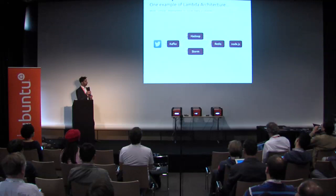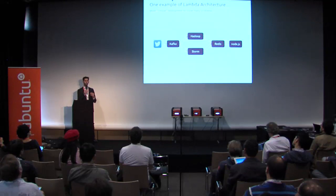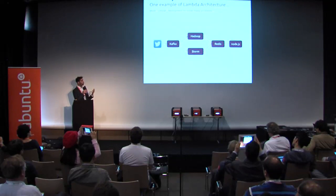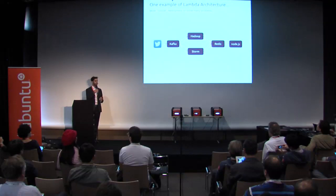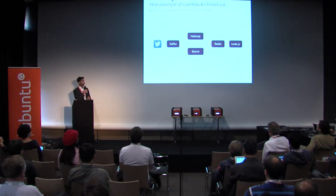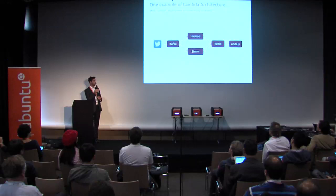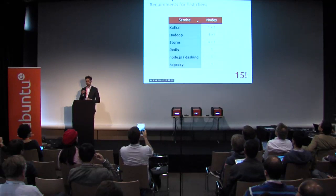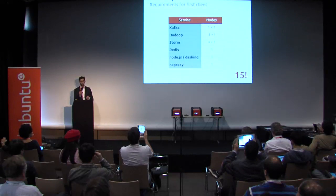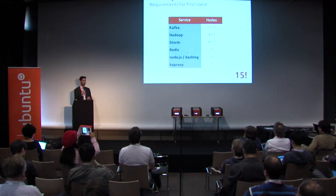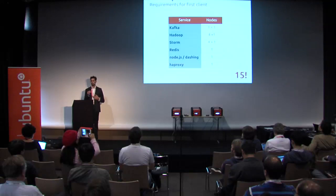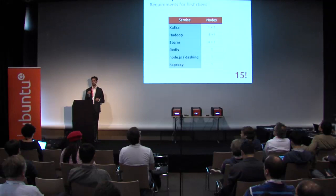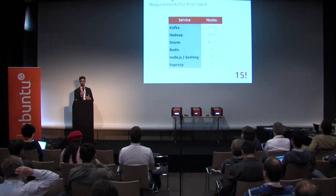We can use this set of five technologies: Kafka is a push-pull messaging system that moves data from Twitter to your workload. Hadoop — the canonical example of big data. Storm is a real-time processing system built by Twitter. Redis is an in-memory database we can use to aggregate views from Hadoop and Storm, and present it to a Node.js application or any front end.